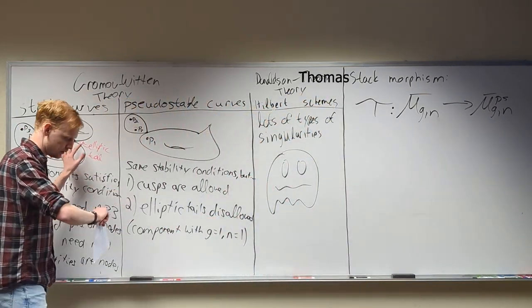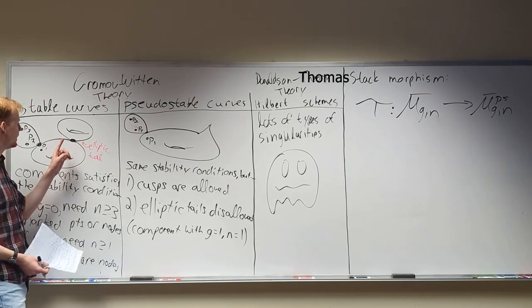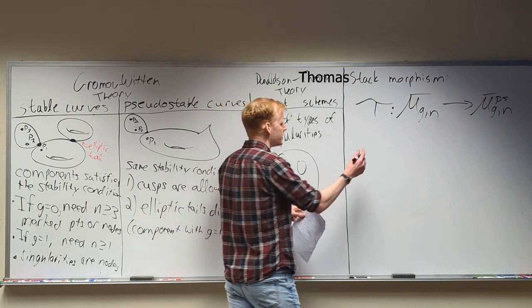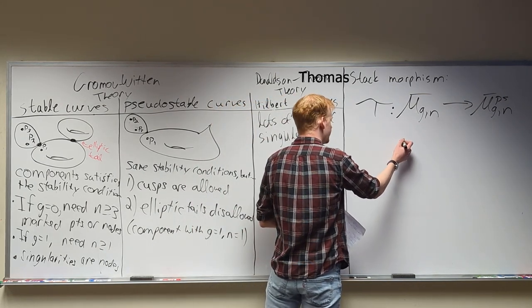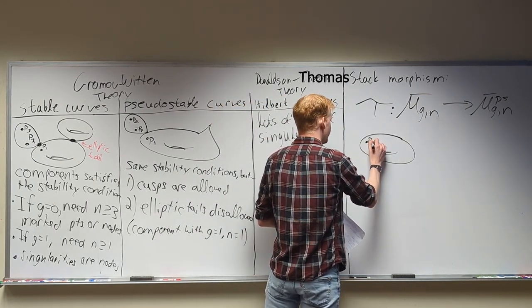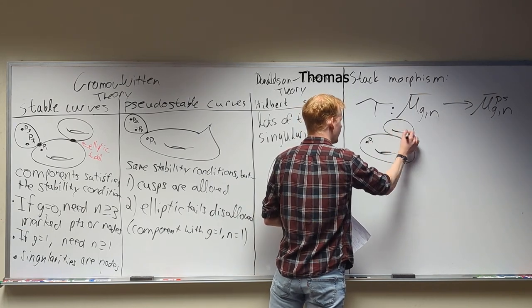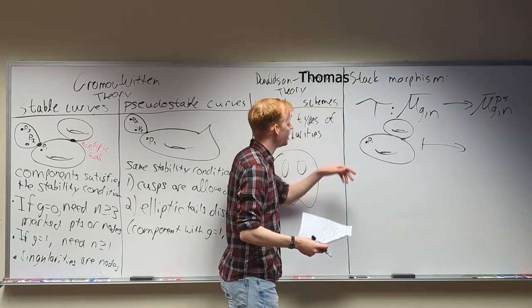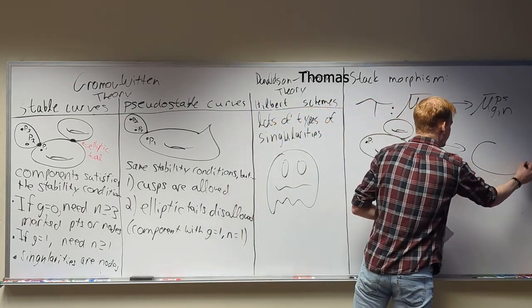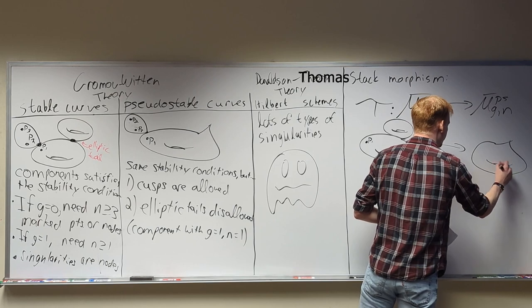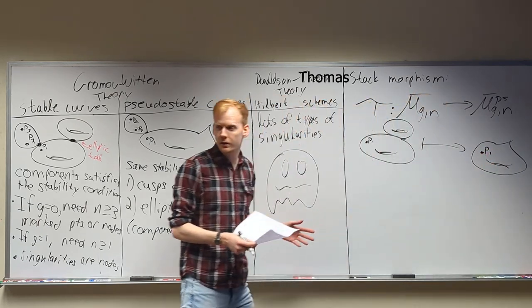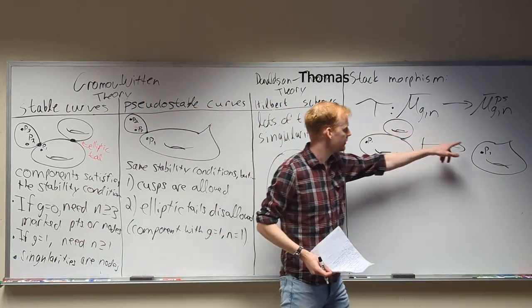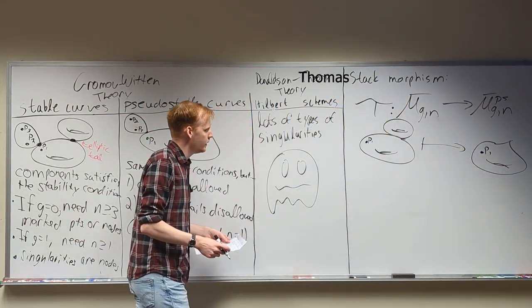With these two types of curves being largely the same, with the big difference being that we trade elliptic tails for cusps, this is a morphism that's larger than the identity other than when we have an elliptic tail, and then we trade that elliptic tail — T for trade — we trade that elliptic tail for a cusp, contracting it down to a cusp.